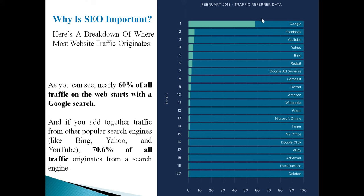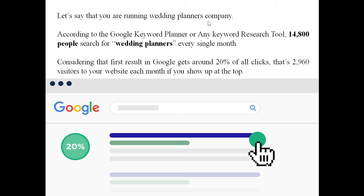Why is SEO important? Nearly 60% of people start their online activity with a Google search. Adding traffic from other search engines like Bing, Yahoo, and YouTube, about 70.6% of all web traffic originates from search engines. So the maximum traffic on the internet comes through search engines.